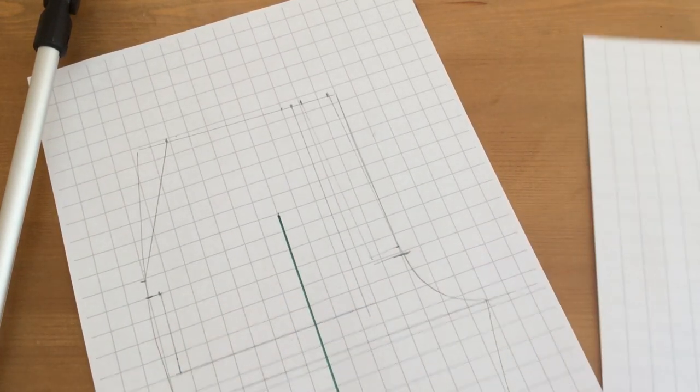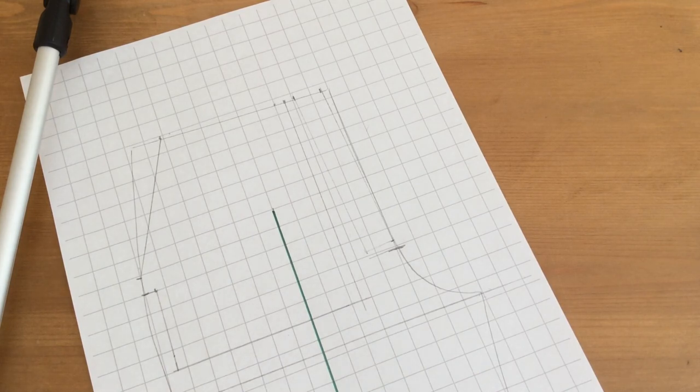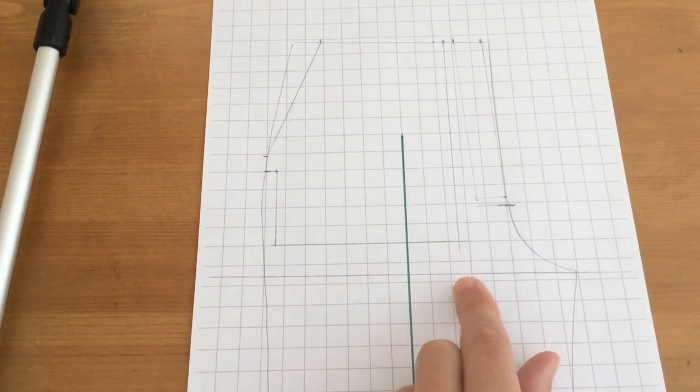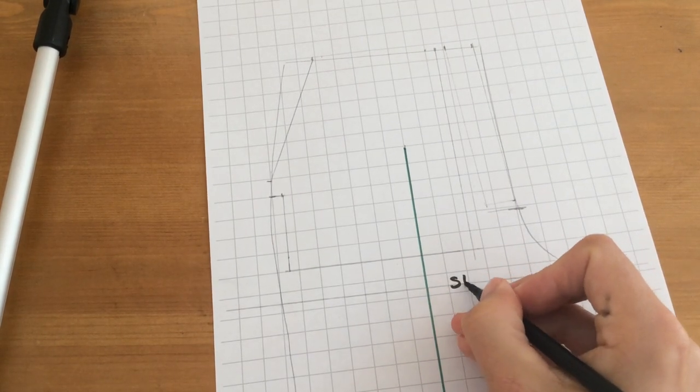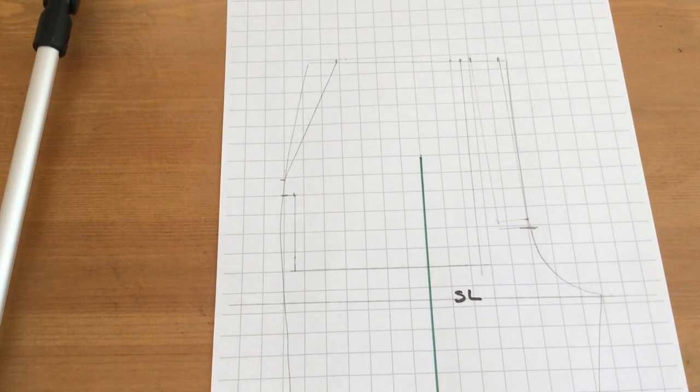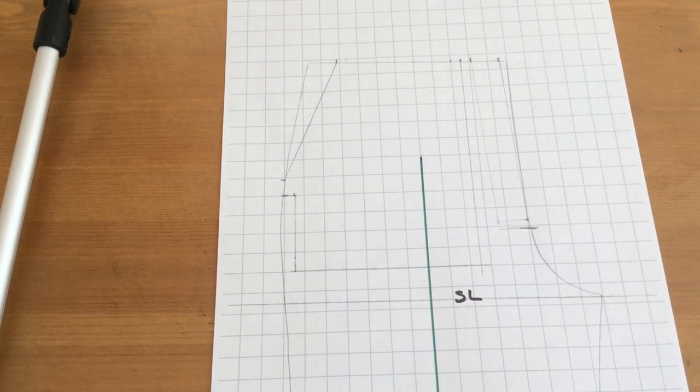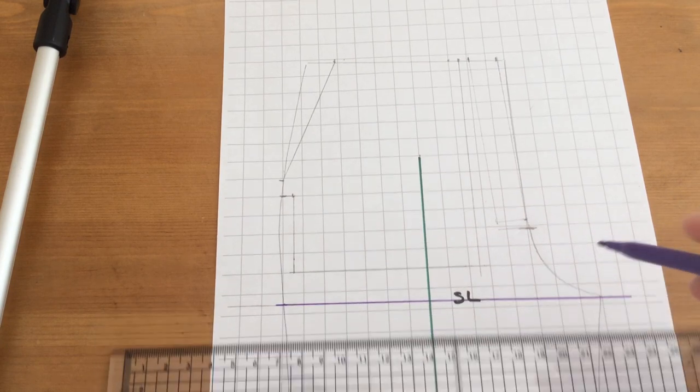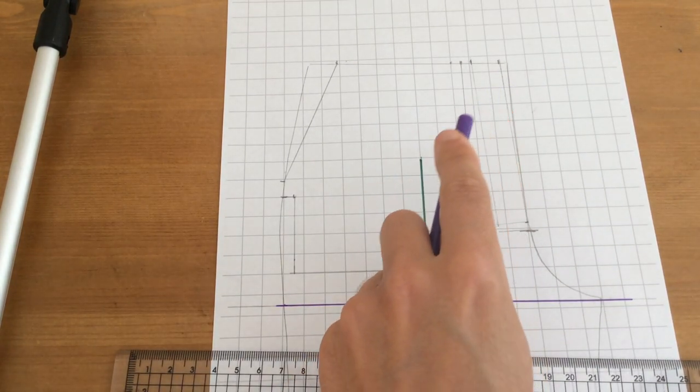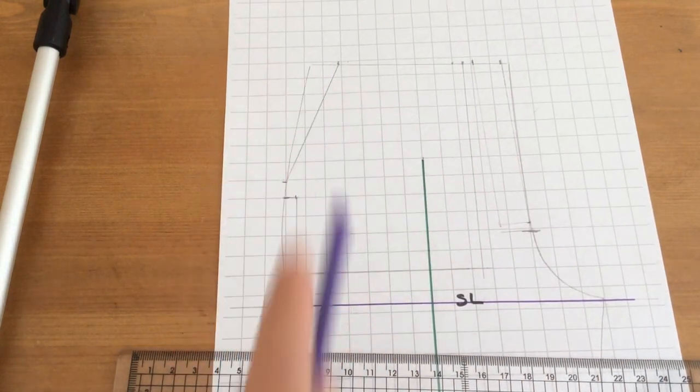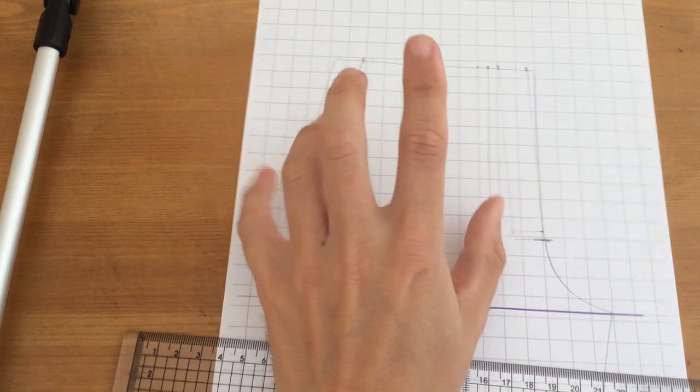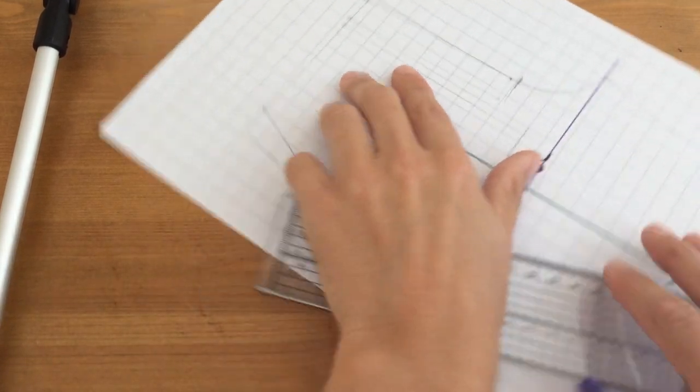We're going to start with the front. I've got the grain line in. I have also added in the seat line—we can abbreviate that to SL. There's two things: the fly and the slanted pocket. I've drawn some of these lines in already as a guide, but I will use color to draw them in. Now the first thing to think about is your hand and how wide it is for putting into the pocket.